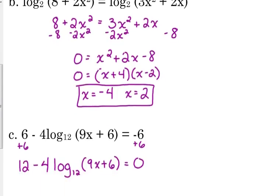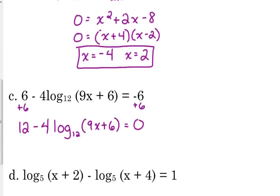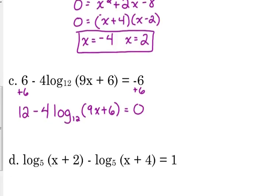However, when we get to example C, we only have a single logarithm, we don't have logs on both sides, so our option here is to get this equal to zero and we're going to graph it. In this case, we added that negative six from the other side, we added six to both sides so that it was equal to zero. We had a constant on this side, so we went ahead and combined those constants right there, so six plus six gave us twelve.